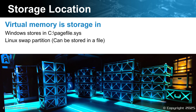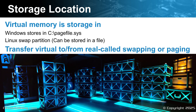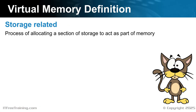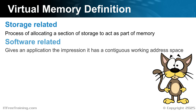When swapping is done between virtual memory and real memory, this is called swapping or paging, and these terms are used interchangeably. Now let's throw a bit of a curve ball into what we have learned. If this is storage-related, we could define virtual memory as allocating a section of storage to act as part of memory — supplementing memory with storage and swapping between them as required. However, in a software sense, virtual memory gives an application the impression it has a contiguous working address space. Both definitions are correct in the right context, so when talking about virtual memory, keep in mind the context in which it is being discussed.